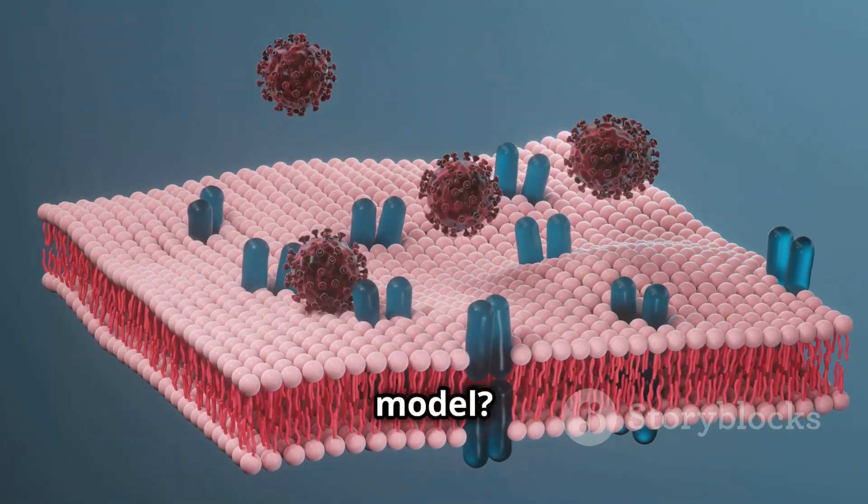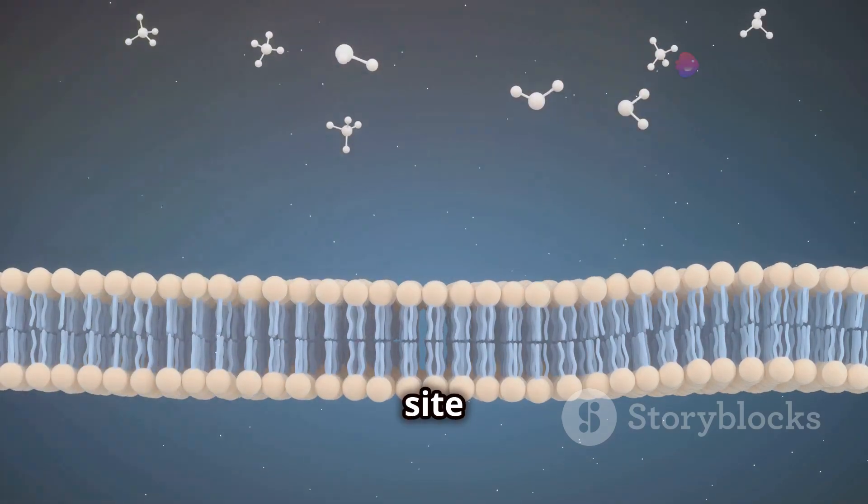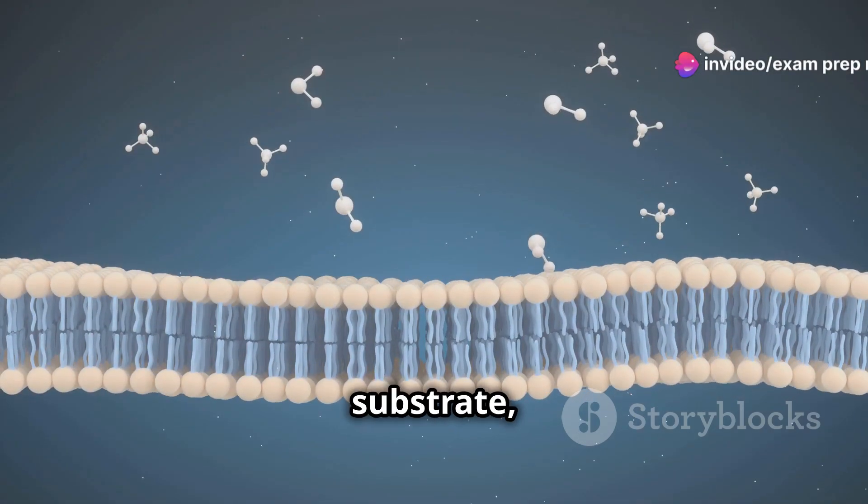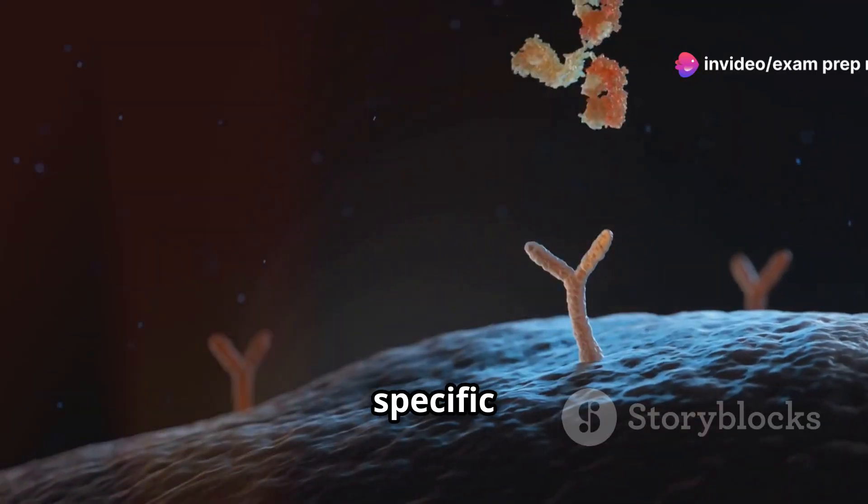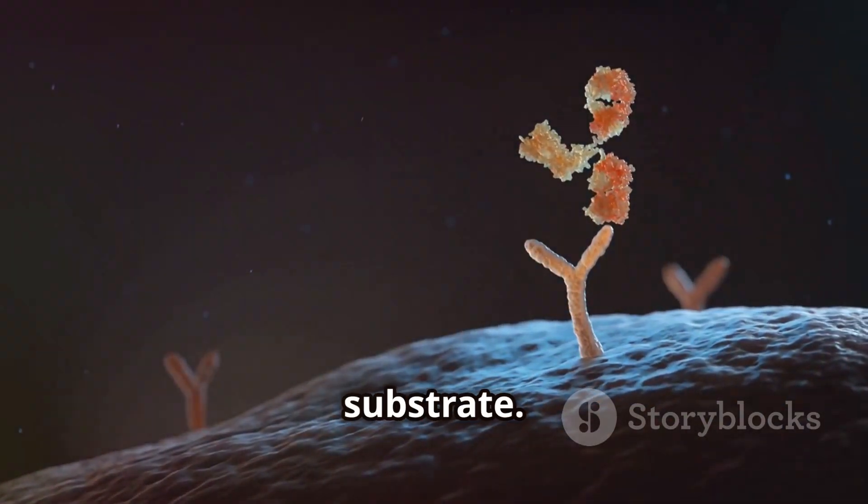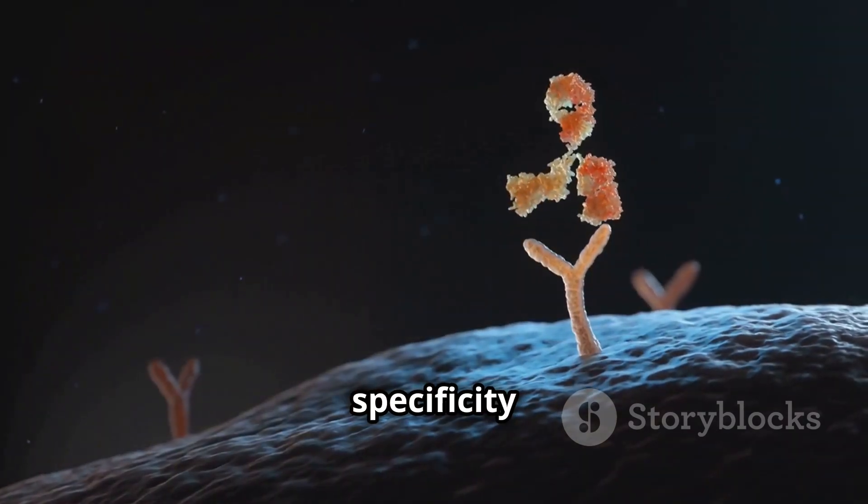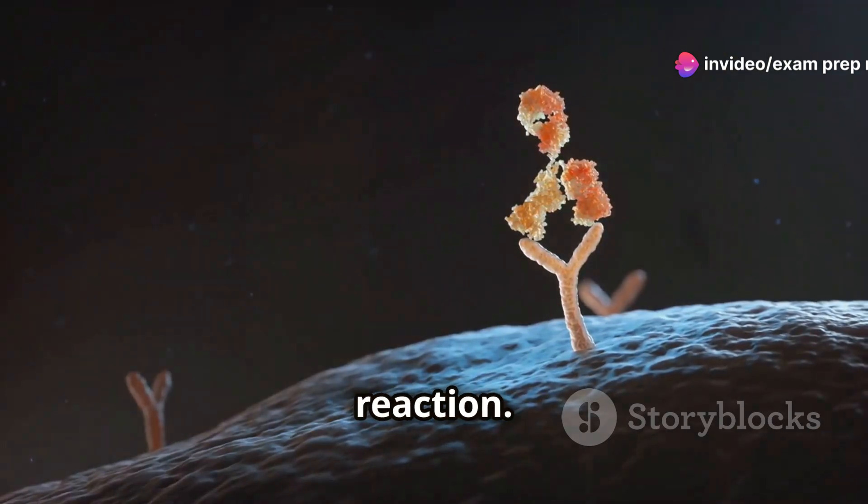Remember the lock and key model? This model illustrates how the enzyme's active site is perfectly shaped to fit the substrate, much like a key fits into a lock. The enzyme has a specific active site, a groove or pocket that perfectly complements the shape of its substrate. This specificity ensures that each enzyme only catalyzes one particular reaction.